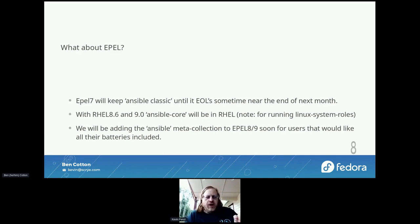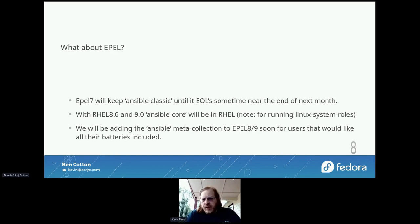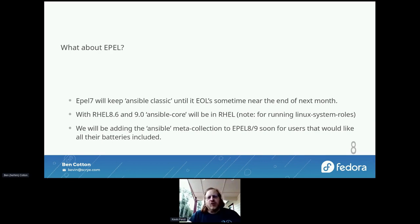We're going to add the Ansible meta collection to RHEL 8 and 9 very soon — branch requests are already out. Soon, you'll be able to install Ansible, get the meta collection and the engine, and have a similar experience to what we have in Fedora. Note that Ansible Core in RHEL is supported specifically for running Linux system roles; if you run Ansible Core in RHEL for something else, you won't get support from RHEL for that use case.